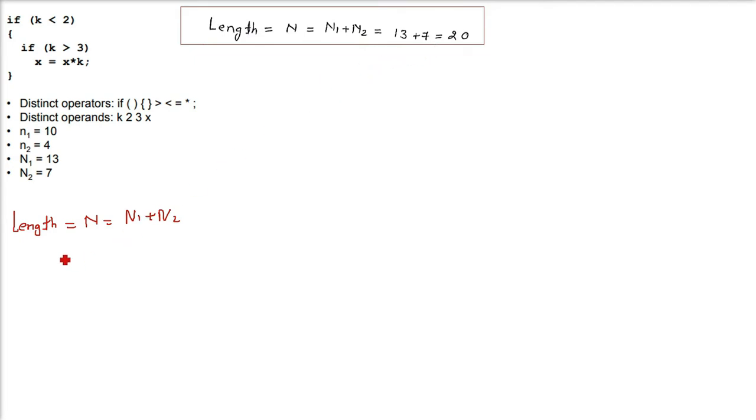Coming to vocabulary. Vocabulary is small n, computed by small n1 plus small n2. Small n1 is 10, small n2 is 4. 10 plus 4 is 14. This is the computation of vocabulary.